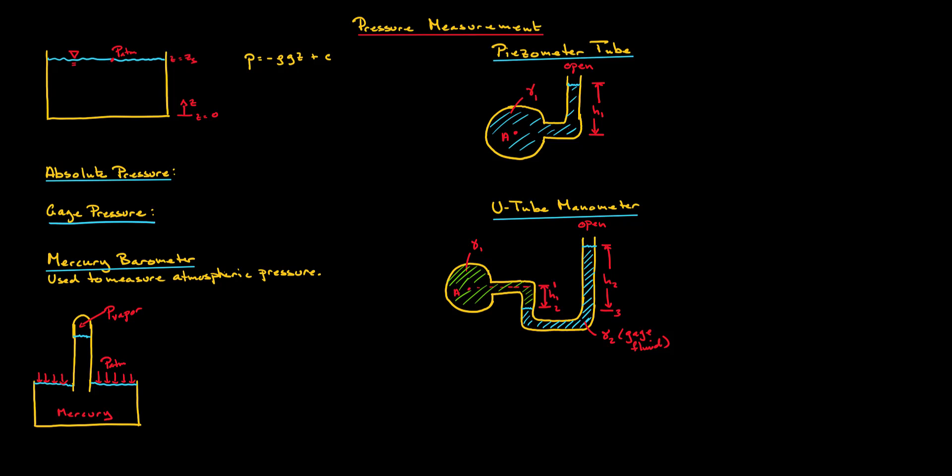Now that we know what pressure is, it is time to explore how we're going to measure it. First, a few conventions. In the previous video, we discovered that the pressure varies in the z direction, or with a change in elevation, and it is given by p equals negative ρgz plus c.